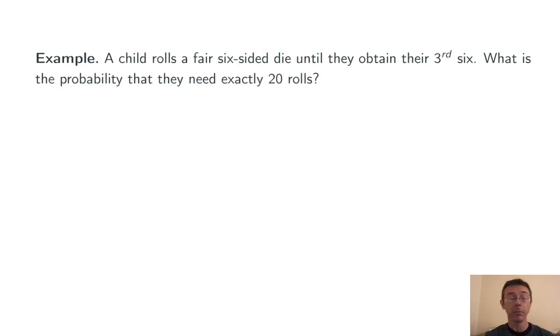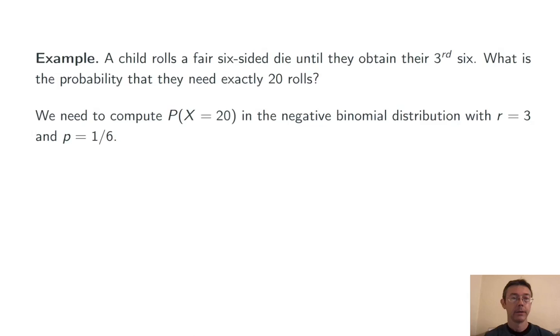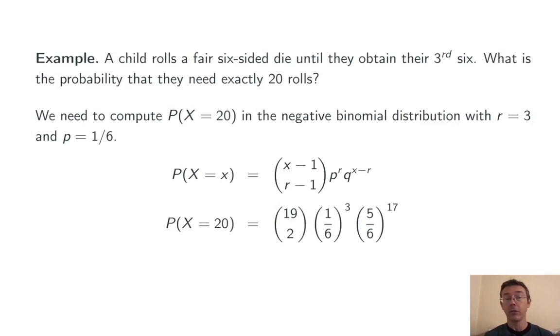Let's do an example. A child rolls a fair six-sided die until they obtain their third six. What's the probability that they need exactly 20 rolls? We need to compute the probability that x equals 20 in the negative binomial distribution with r equals 3 and probability of success p equals 1/6. So q is 5/6. We plug in the general formula with x equals 20 and r equals 3, and it all simplifies down to about 3.6%.